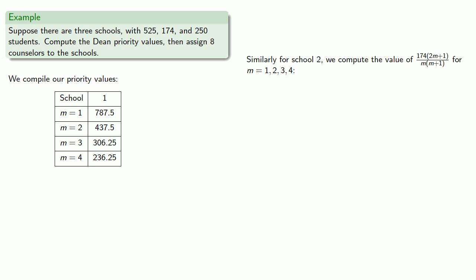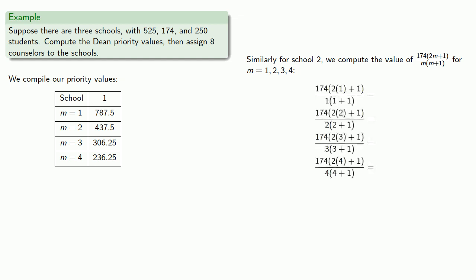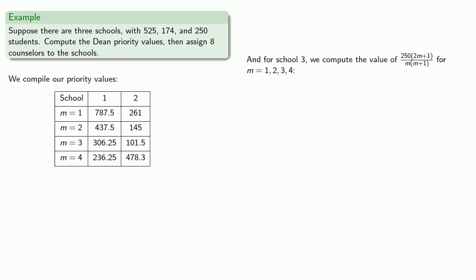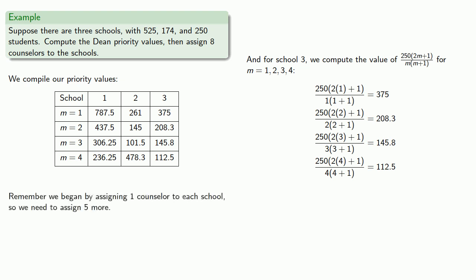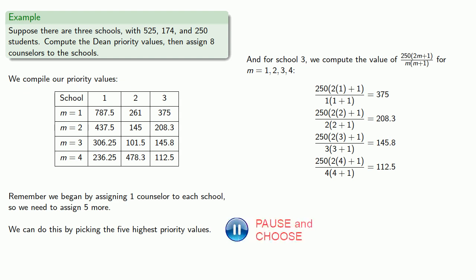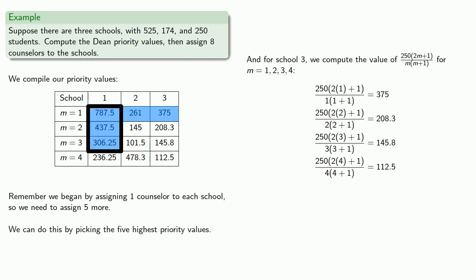Similarly, for school two we compute the priority values: 174 times (2M+1) divided by M times (M+1), again for M equal 1, 2, 3, and 4. And likewise for school three. Remember, we began by assigning one counselor to each school, so we need to assign five more. We do this by picking the five highest priority values, which gives us our final apportionment. School one gets three more counselors for a total of four, while schools two and three both get one more counselor for two apiece.